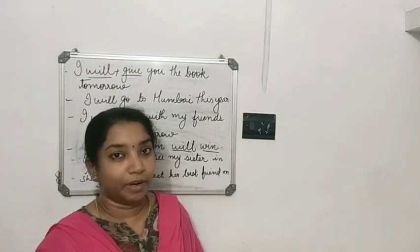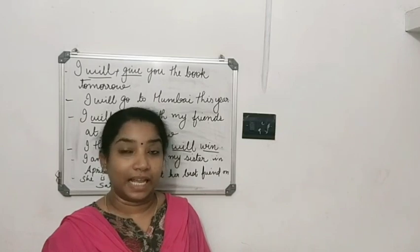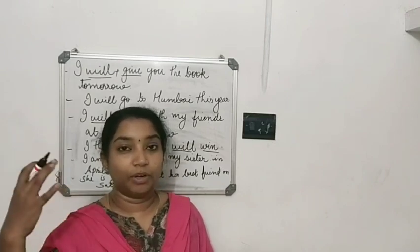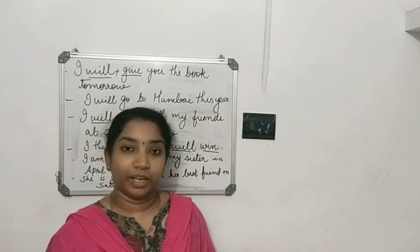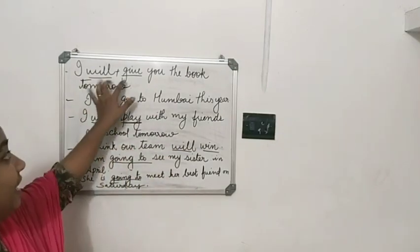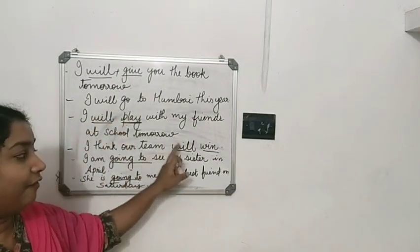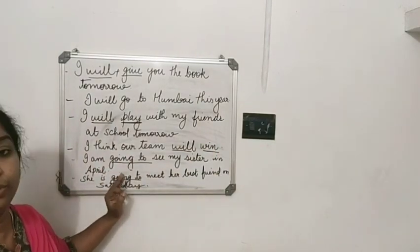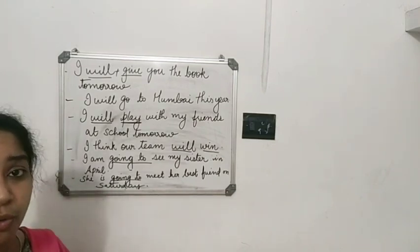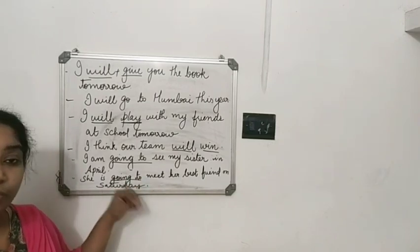Simple future tense describes an action or event that takes place later. We use will plus the base form of the verb: will give, will go, will play, will win. We can also use 'going to' to express future — for example: I am going to meet my friend tomorrow. I am going to give this book tomorrow.